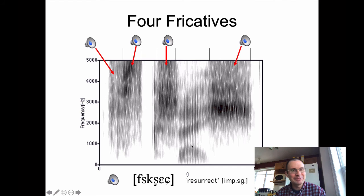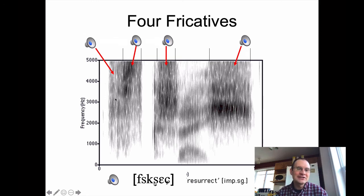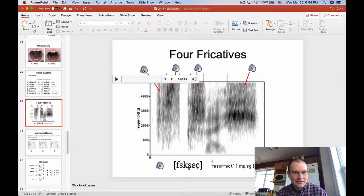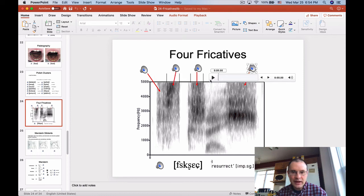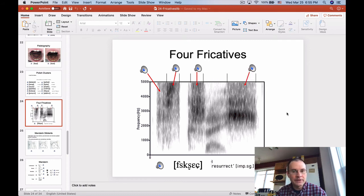I'll focus on this one because it has four different fricatives, one stop, and one lonely vowel. Getting close to Easter time — it's the word for 'resurrect' in Polish. Here's the F part — it's diffuse, with low amounts of energy across the board but evenly distributed. Here's the S with more intensity at higher frequencies. For the retroflex, you end up lowering the frequencies a bit — you see that dark band come down. And the alveolopalatal one — you can see the formants of the vowel pointing towards an E-like pattern with low F1 and high F2, indicating palatalization.